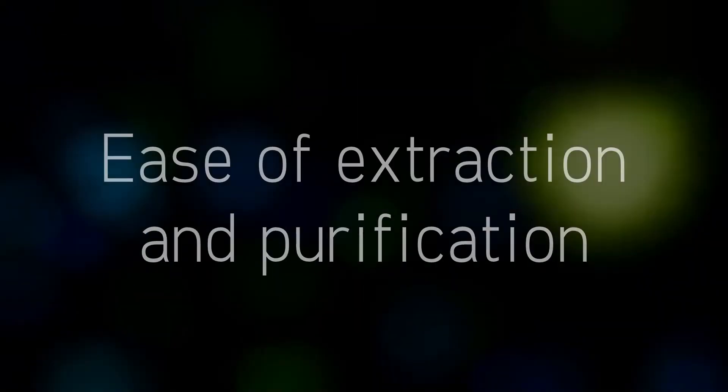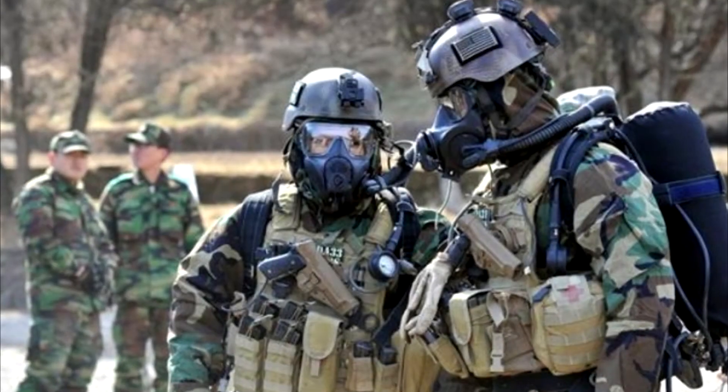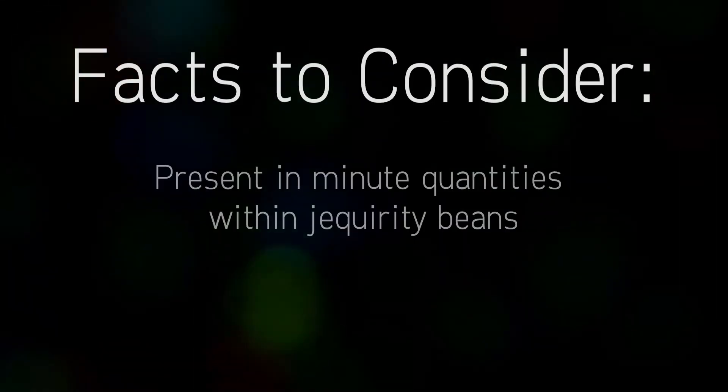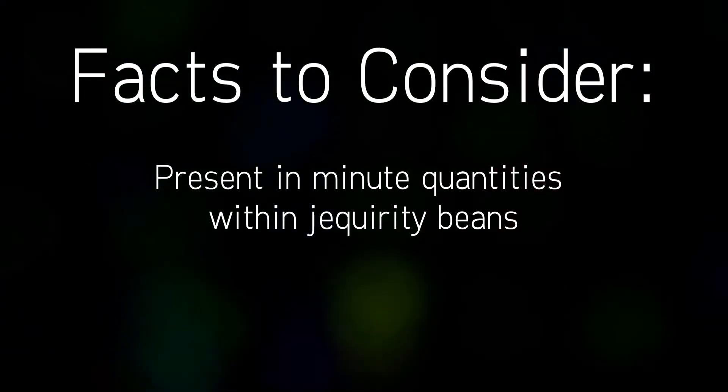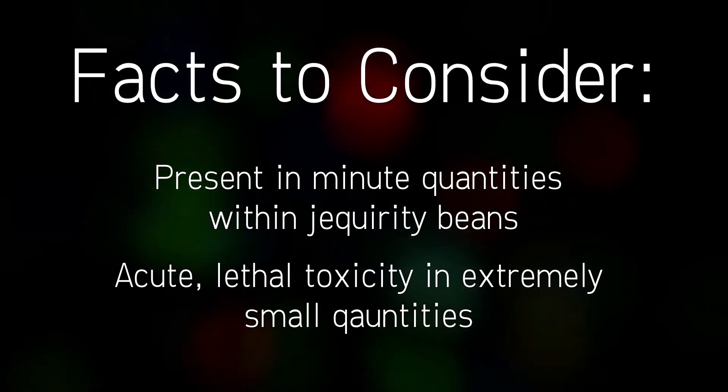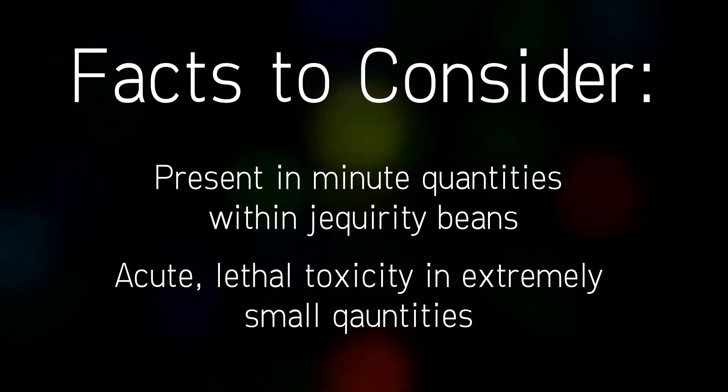Due to the ease at which Abrin can be extracted and purified, it has been classified as a potential chemical warfare agent. Though only present in minute quantities within jequirity beans, its high toxicity plays a leading role in its use as a harmful agent. Once isolated, Abrin can be formed into a powder or aerosol droplets for larger scale dissemination.